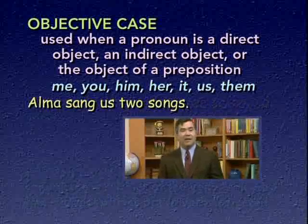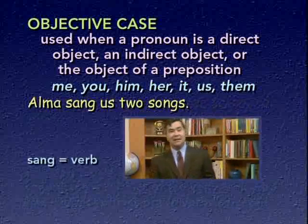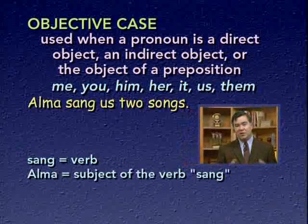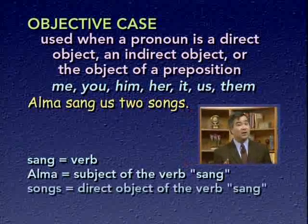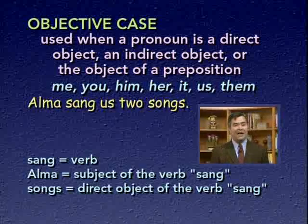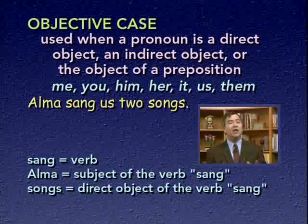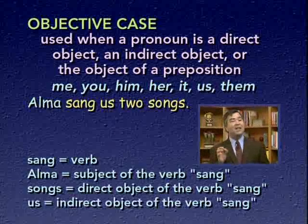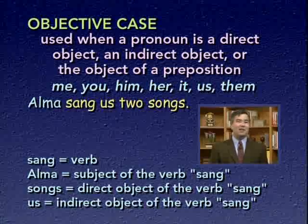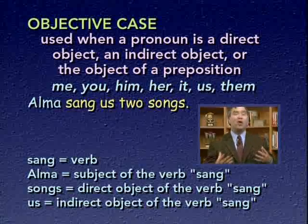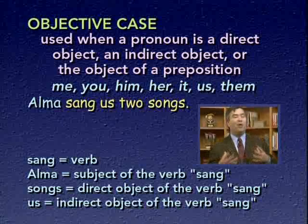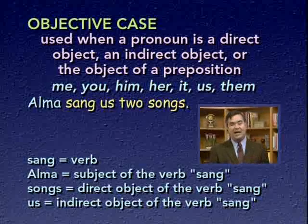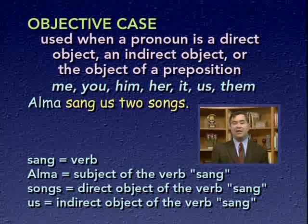'Alma sang us two songs.' The verb is sang and the subject is Alma. Songs is the direct object — what Alma sang. The pronoun us is the indirect object: it tells who Alma sang for. The indirect object explains the person to whom or for whom the action is done. Since us is being used as an indirect object, it should be in the objective case, as it is.